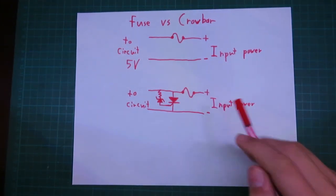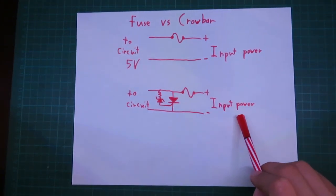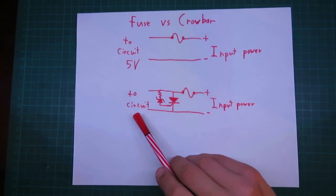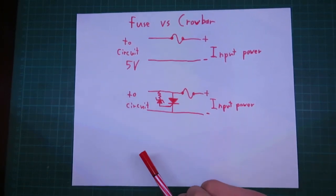The advantage of using a crowbar circuit is, you have your input power into the circuit, and you have your crowbar circuit in between those.